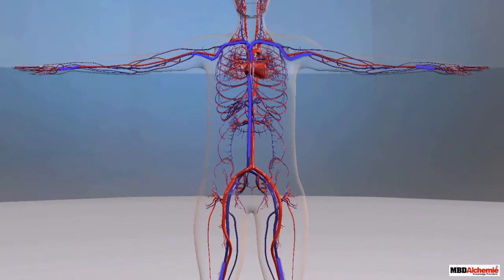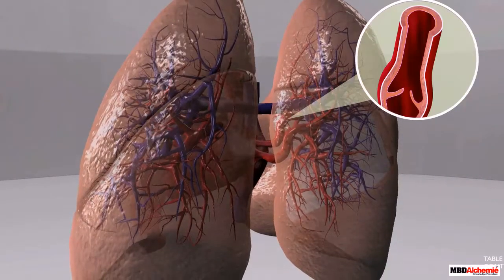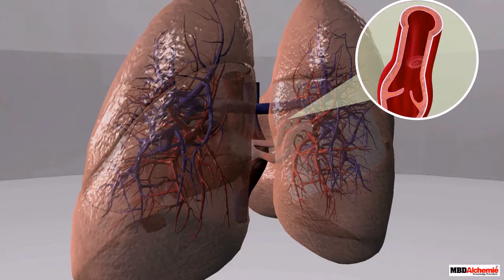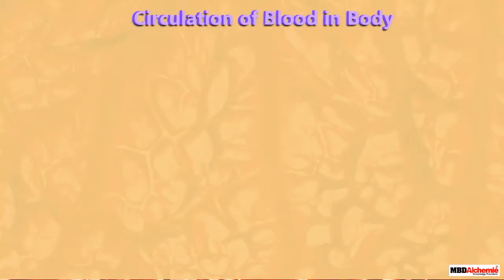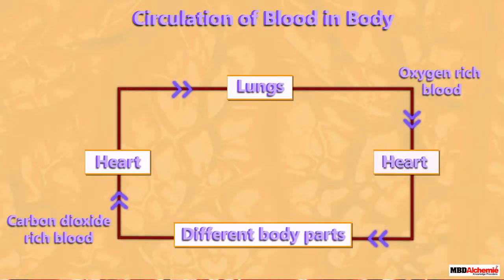Once all the body parts take oxygen from the blood, the heart receives the carbon dioxide-rich blood back through the veins. From the heart, the carbon dioxide-rich blood reaches the lungs with the help of the pulmonary artery. The heart continuously pumps blood from the lungs to the body and then back to the lungs.